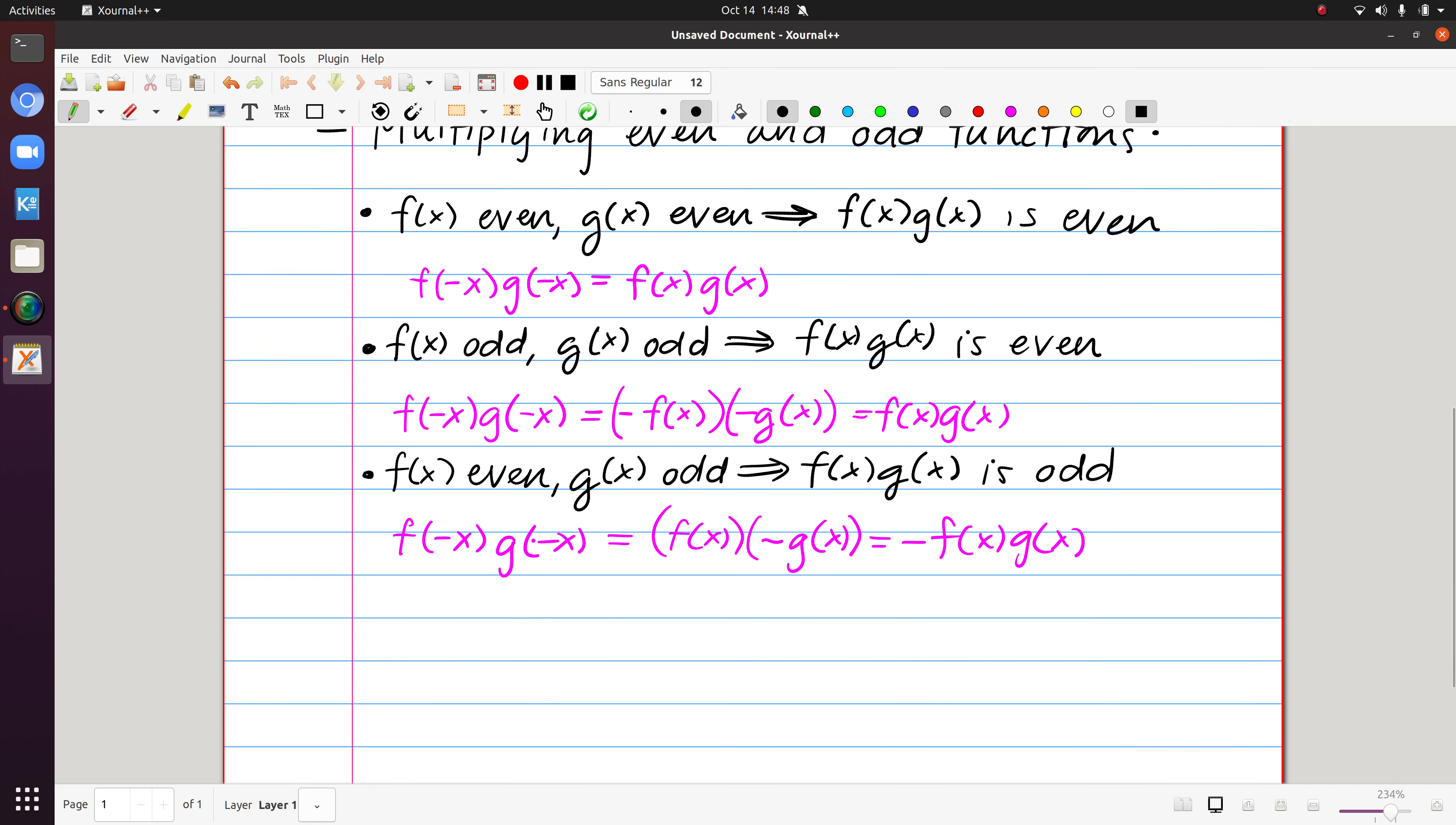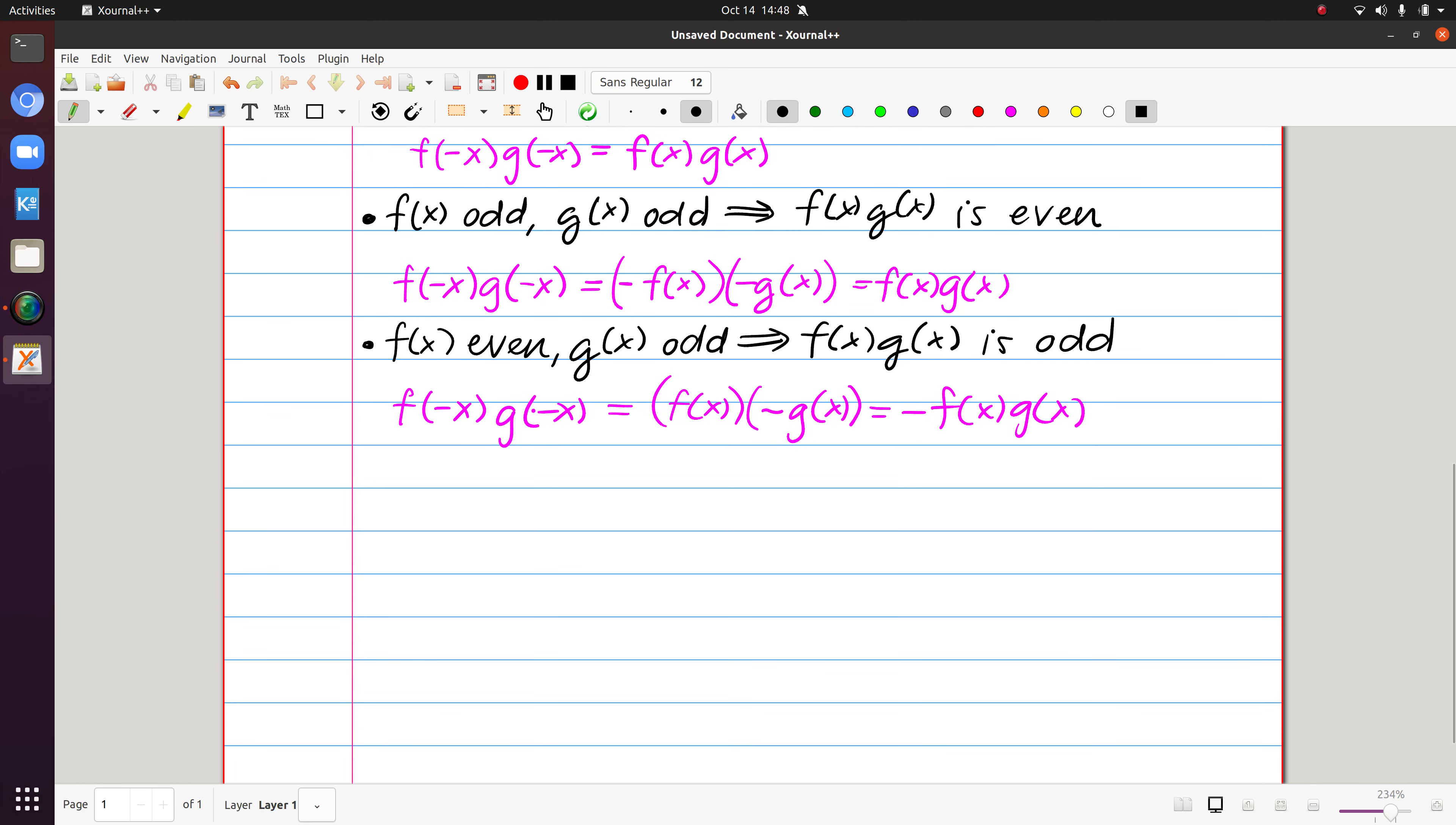So what does this have to do with Fourier series? Well, the consequence is as follows. So if the 2π periodic function we're starting with, f of x, if it is odd,